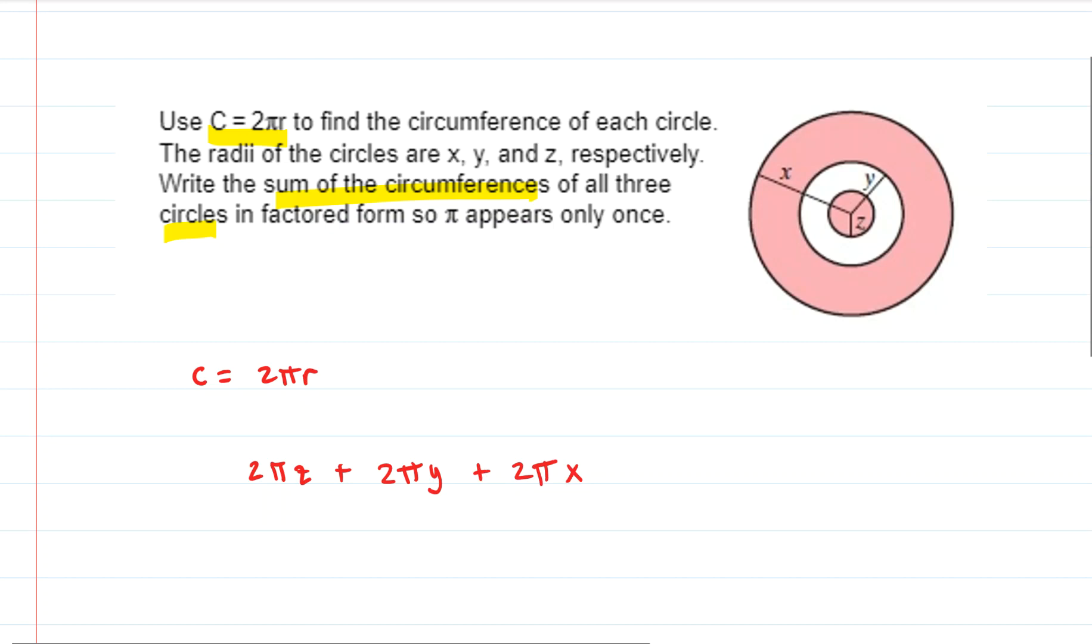So here we have small pink, then next we have the medium white circle, and then we have the large pink circle.